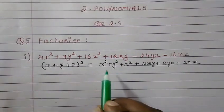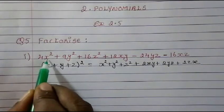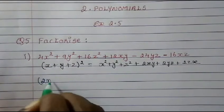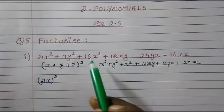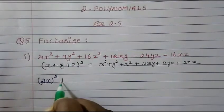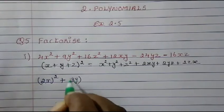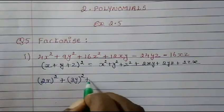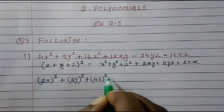So let's write down now: 4x square — can we reduce this? 4x square can be written as (2x) whole square, because when we square 2x we get 4x square. Then plus: 9y square — can we write 9 as (3y) whole square? Yes, that gives us 9y square. Same way, 16z square can be written as (4z) whole square, which gives us 16z square.